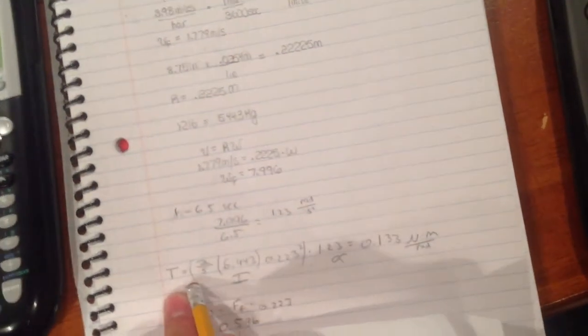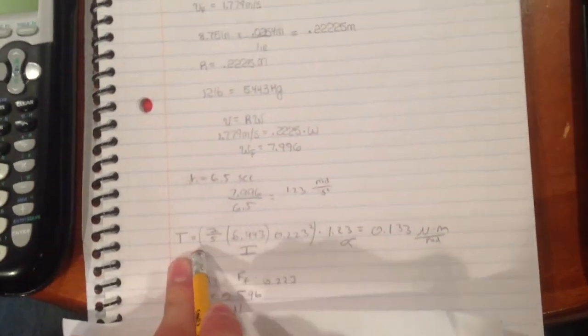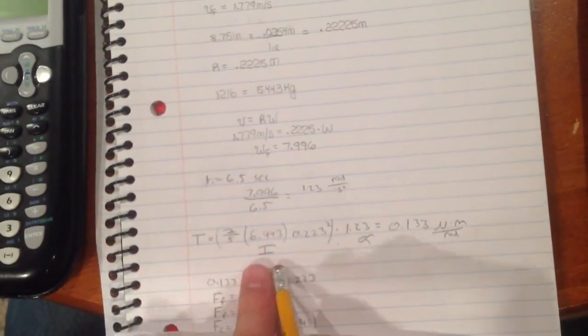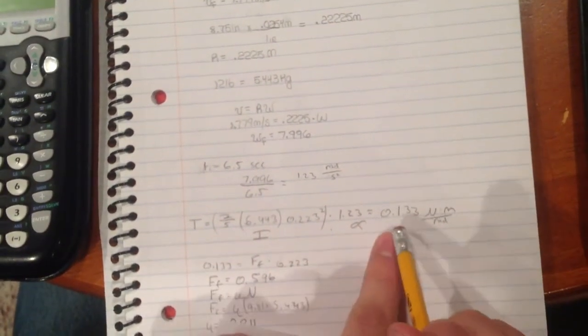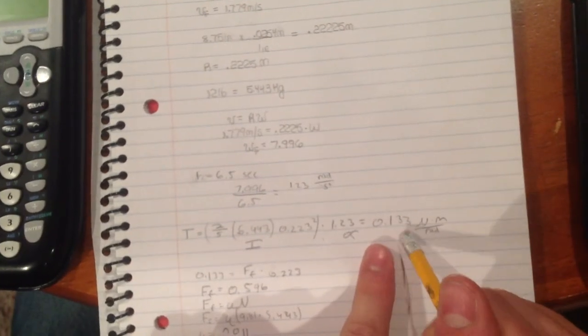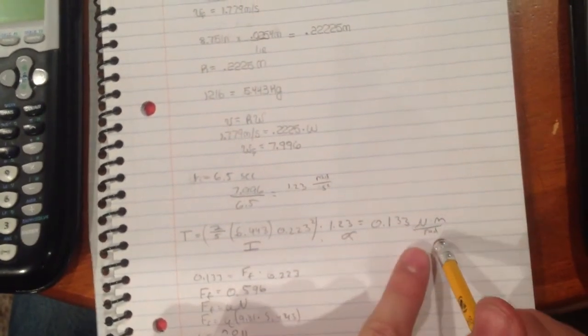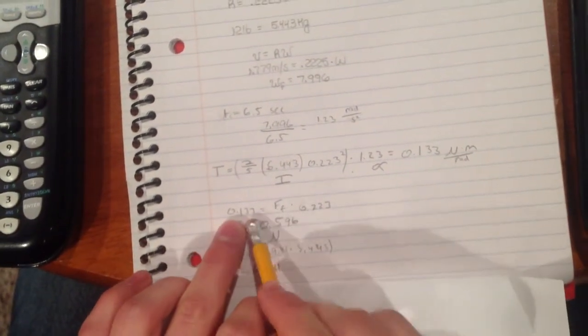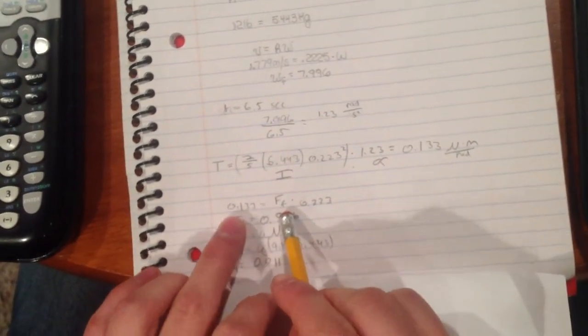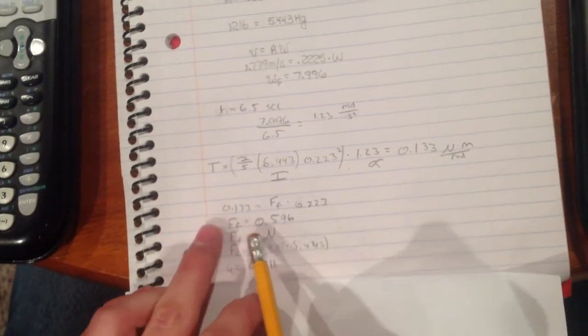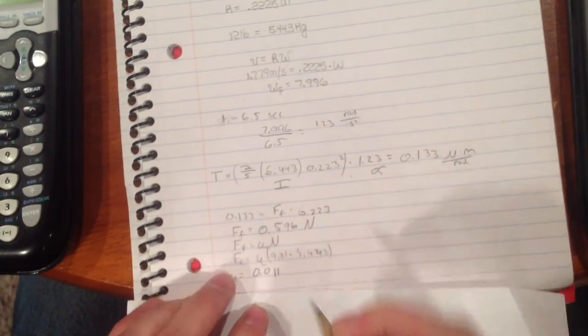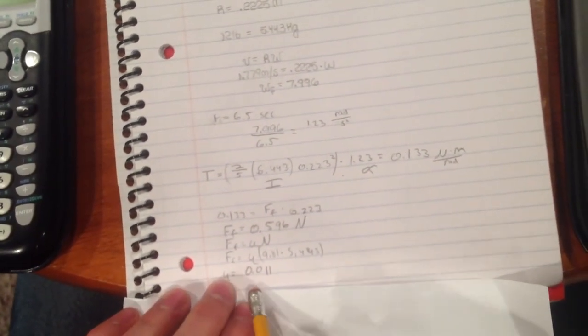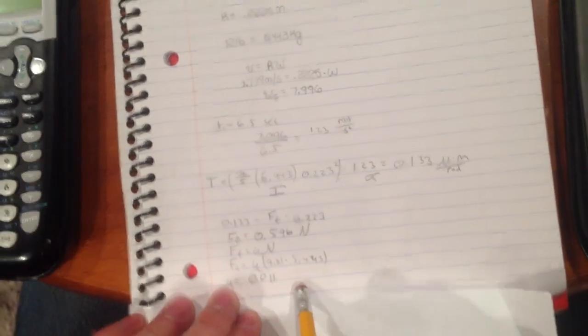Then once we had the angular acceleration, we can find the torque. So using the moment of inertia, which is here, and the angular acceleration, we found the torque to be 0.133 newton meters per radius. And then finally using the torque, we decided to find the friction. So the force of friction was 0.596 newtons, and the coefficient of friction was 0.011. Wow.